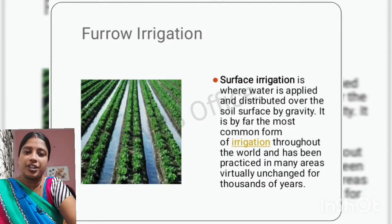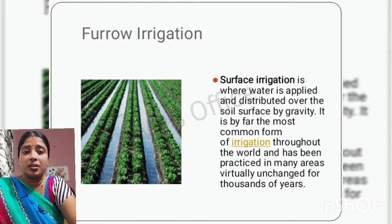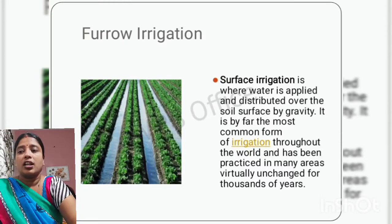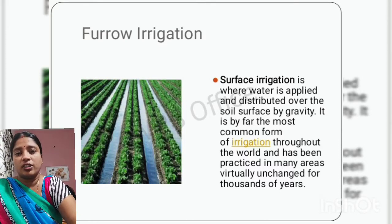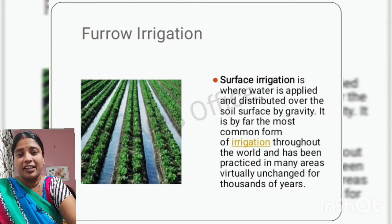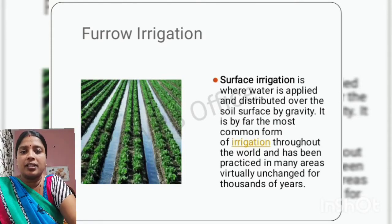Furrow irrigation is also known as surface irrigation. This irrigation is very famous throughout the world and has been practiced since many years and remains unchanged. In this method, water is applied to the field and small channel-like structures are made across the field. When water is applied, it gets distributed over the soil with the help of gravity — the earth's natural force. It is the most common method of irrigation used throughout the world.